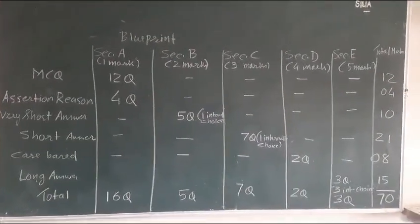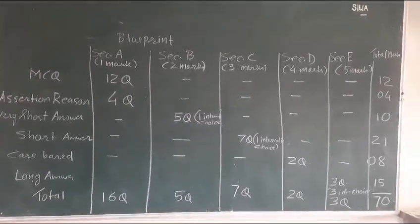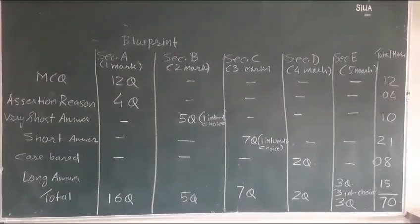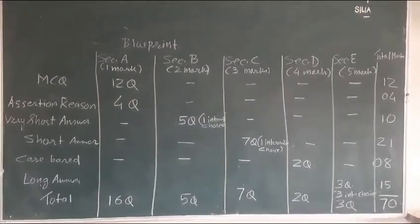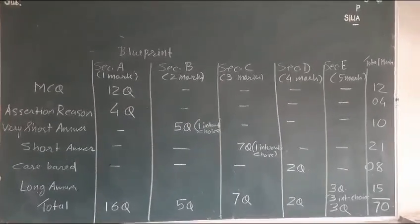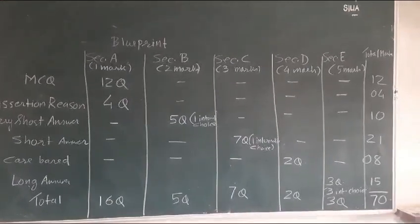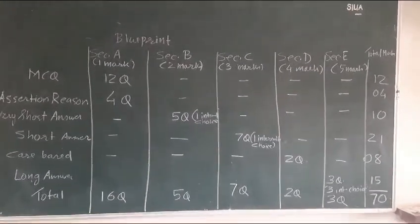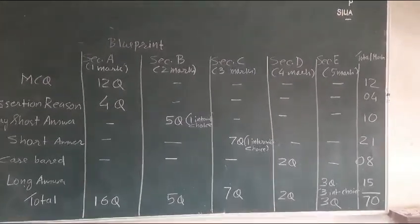So if I want to summarize the blueprint, you can see the type of questions are MCQ, Assertion Reason, Very Short Answer, Short Answer, Case Based Question, Long Answers. And in MCQ section that contains 1 mark, 12 questions would be there. 4 questions will be of assertion reason, that is also containing 1 mark. So total 16 questions of 1 mark.